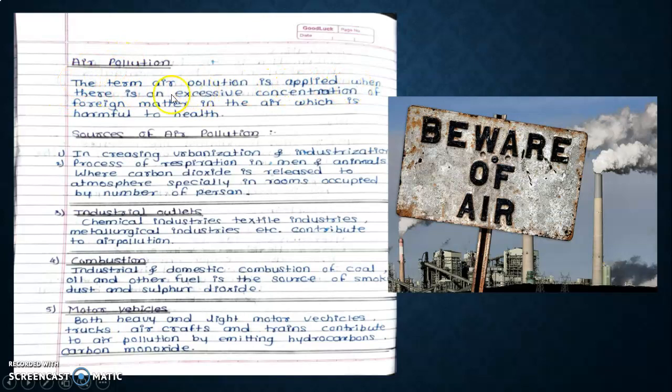Sources of air pollution include increasing urbanization and industrialization, process of respiration in men and animals where carbon dioxide is released to atmosphere, industrial outlets and chemical industries like textile industries and metallurgic industries, and combustion of fuel.